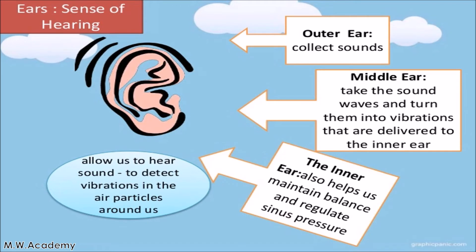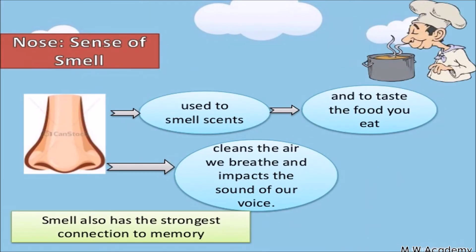Number four: nose. Nose gives us a sense of smell. The nose helps us to detect what type of smell is around us — a good smell or a bad smell. Our nose tells us about all the smells around us, whether they are good or bad, pleasant or unpleasant.